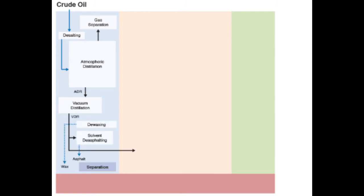The vacuum distillation unit produces vacuum distillate fractions as well as the residue — the non-distillable residue from crude oil called vacuum distillation residue, or VDR. The VDR could be sent to solvent de-asphalting to remove asphalt, and also to a conversion process. This is the bottom of the barrel, in essence. Dewaxing is another separation process — a physical process — that takes feed from the vacuum distillation fraction.